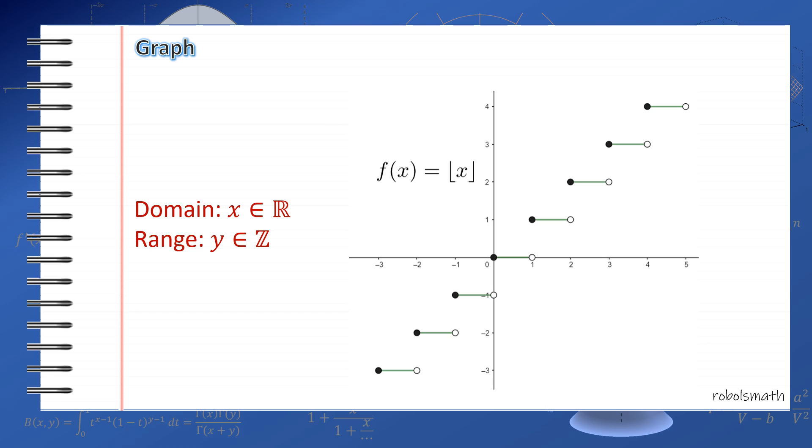For this one, this is the graph of the floor function. So it's like staircases going up. Take note that the left side of the bar is always shaded, while the right one is hollow. Because, for example, this point, this is 1, 0. The floor of 1 is not 0, it's 1. But immediately before 1, for example 0.99, the floor of that is 0. That's why it looks like this. So you go up step by step.